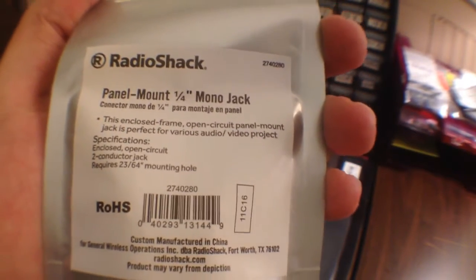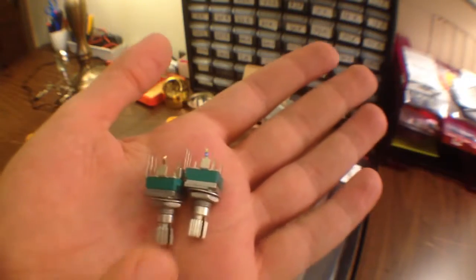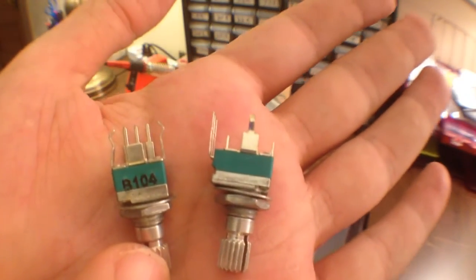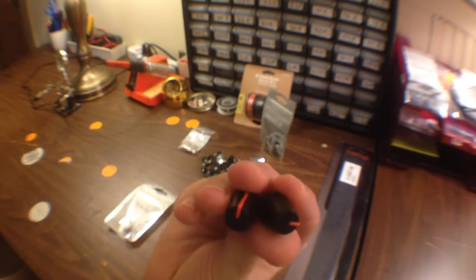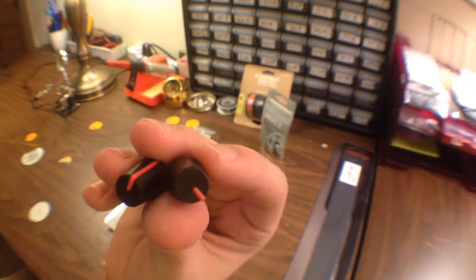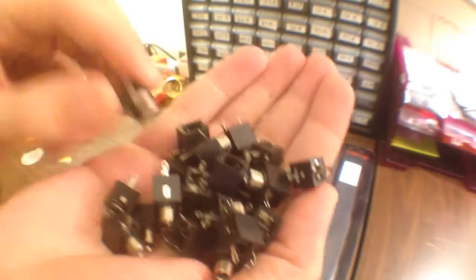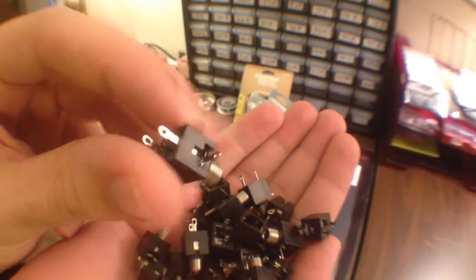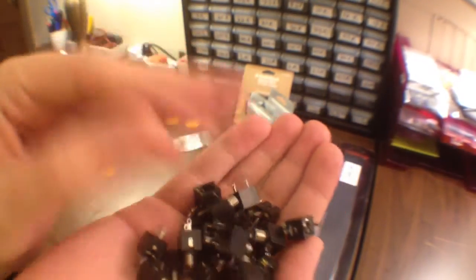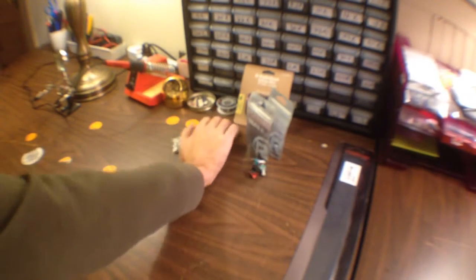We're going to be using two of these quarter inch mono jacks, two of these 100k linear potentiometers for our attenuators. There's the two knobs we're going to be using for it. And then we've got a bunch of these 3.5 millimeter jacks that we're going to be using for our standard multiples.